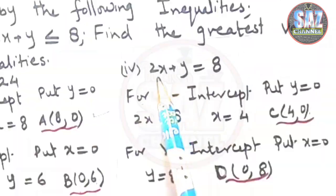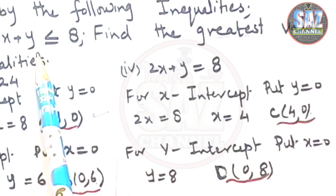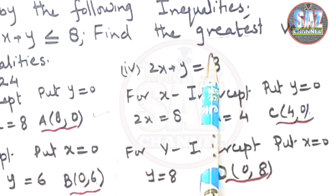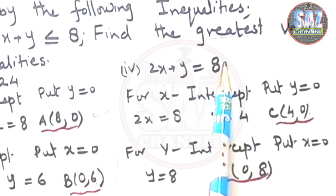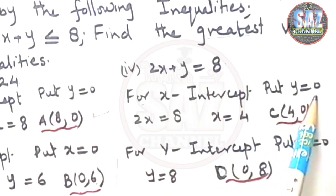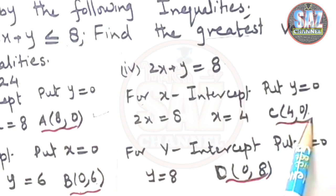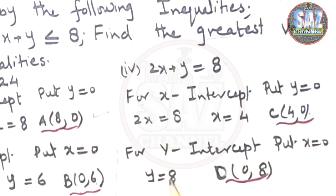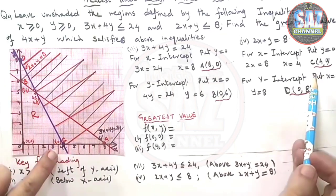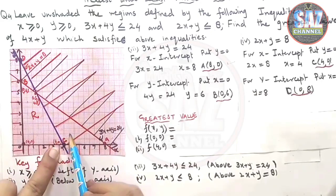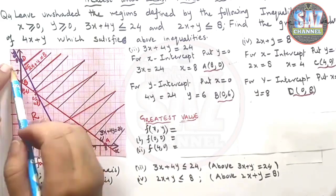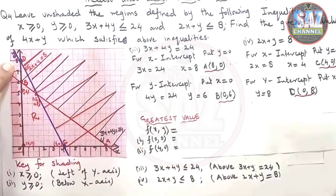Coming to the last inequality condition that is 2x + y ≤ 8. Turn this inequality condition in form of the equation. For x-intercept, I have to make y = 0 and my point comes C(4, 0) and for y-intercept, put x = 0 and when I am putting x = 0, my y value comes 8 and the point is D(0, 8). Plot the points. C is (4, 0). So C will be coming at this place and (0, 8), another point will be coming over here.